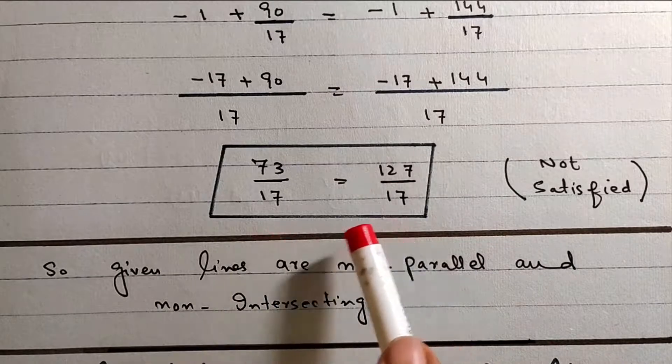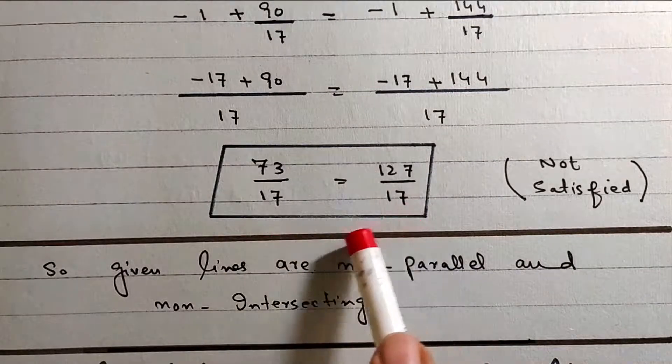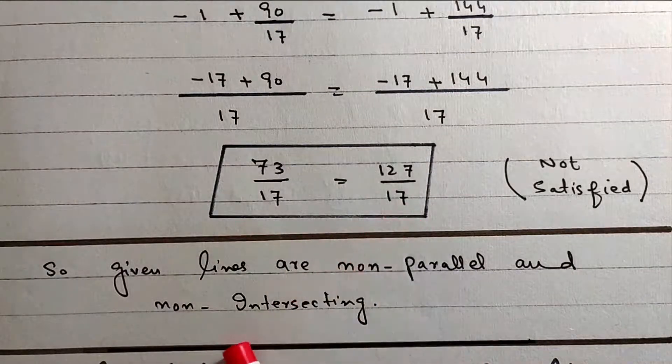If it is satisfied, then the lines intersect at a common point. Thank you.